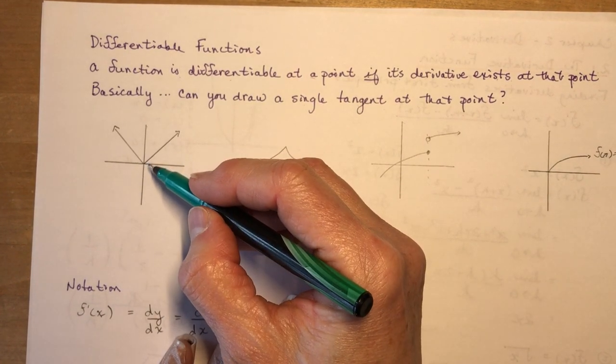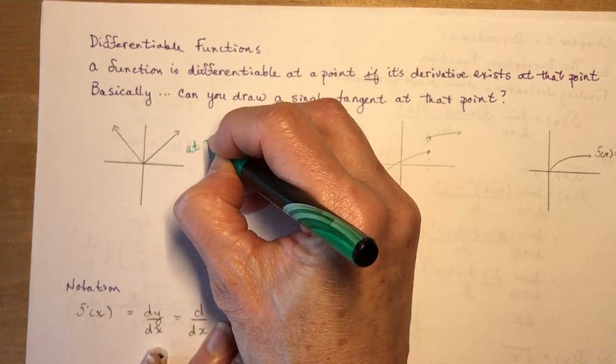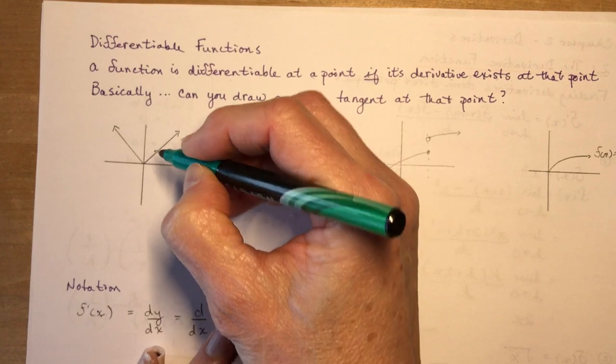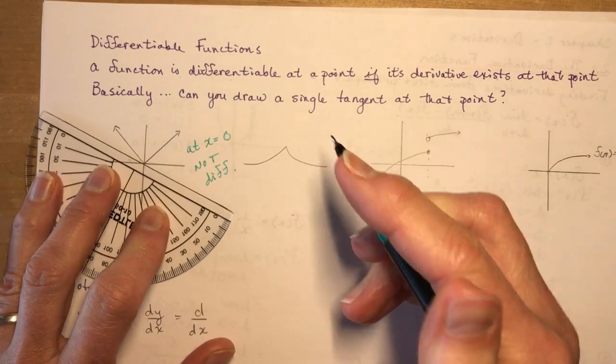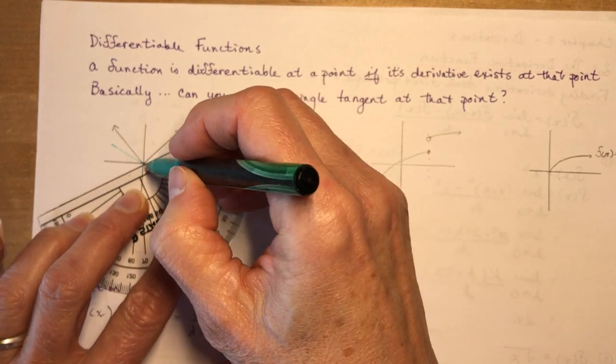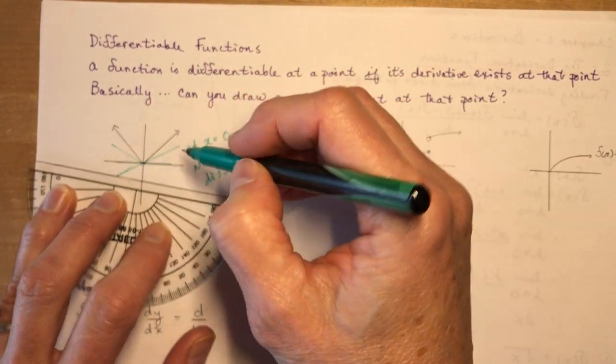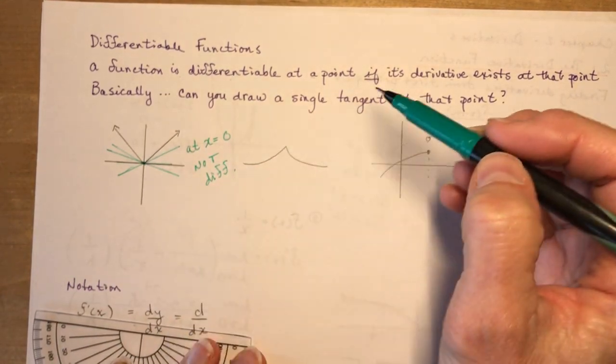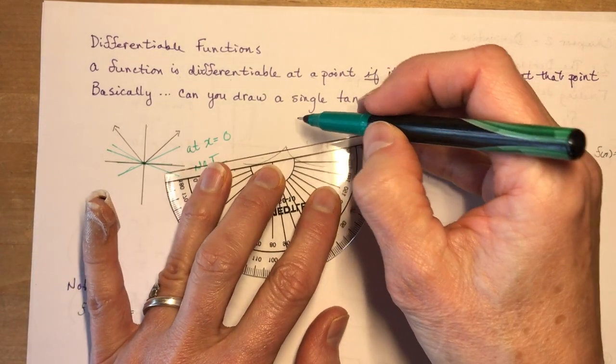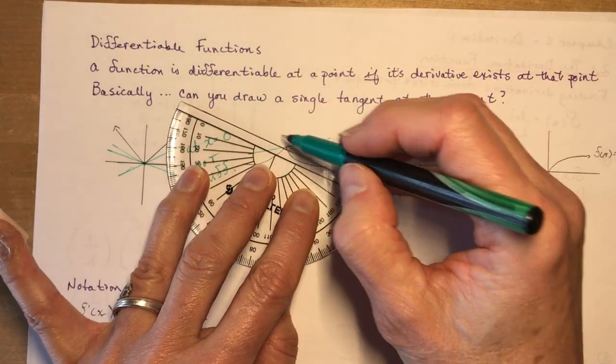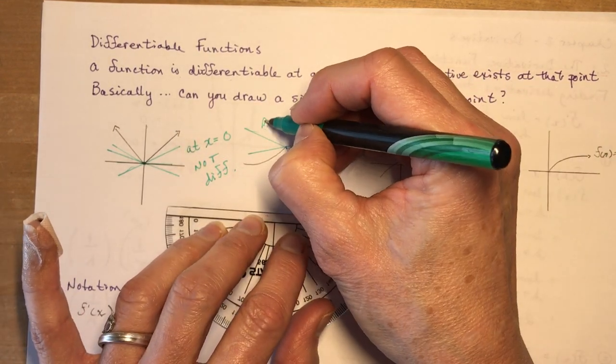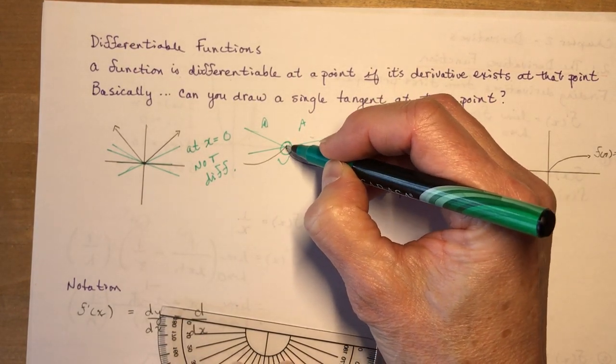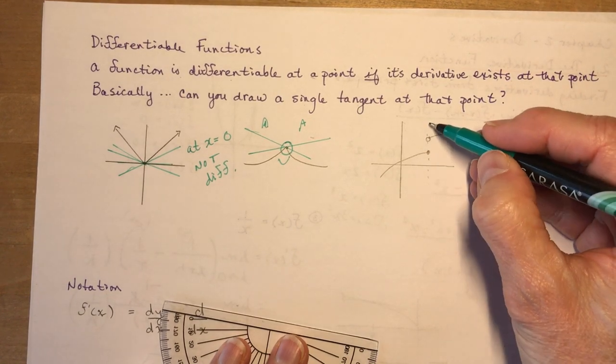For instance, if we have the absolute value function at x equals 0, it is not differentiable. And the reason is, I could draw a whole bunch of tangent lines here. At this point here, I could draw one like this, I could draw one like this, I could draw one like this. So there's an infinite number of points on that teetering point. It's like this one here. How many can I draw? I could draw one like this, I could draw one like this. And if you want, you could make a little kitty cat out of that and say, no, it's not differentiable.